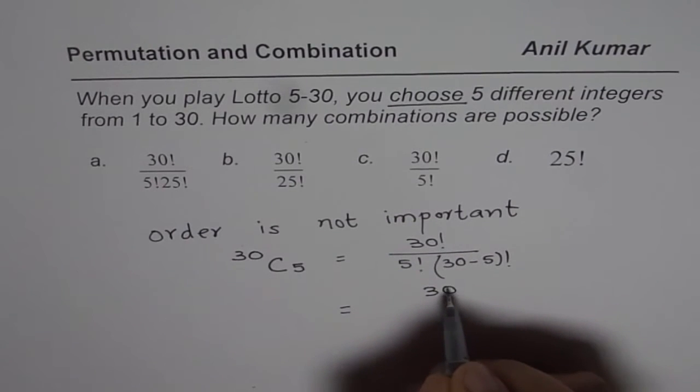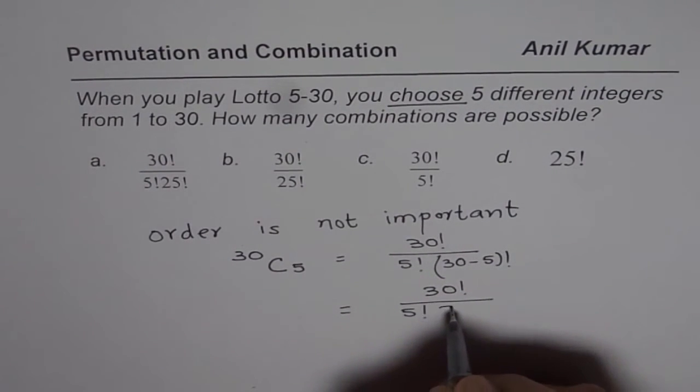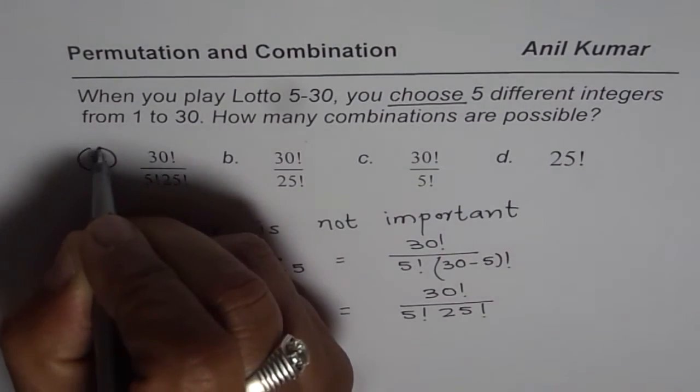So we could write this as 30 factorial divided by 5 factorial times 25 factorial. So the correct option is A.